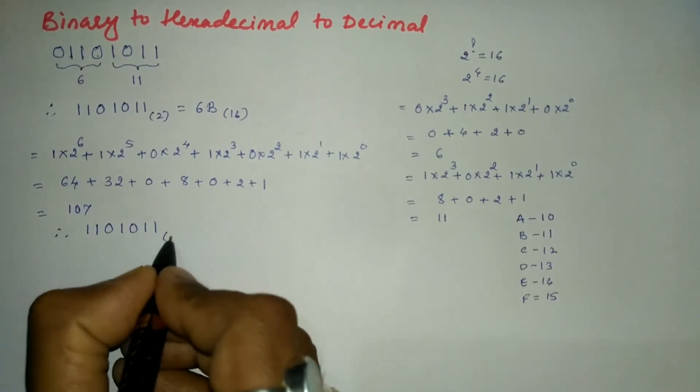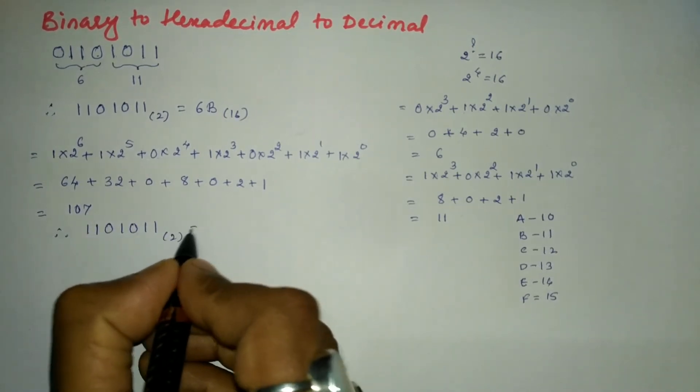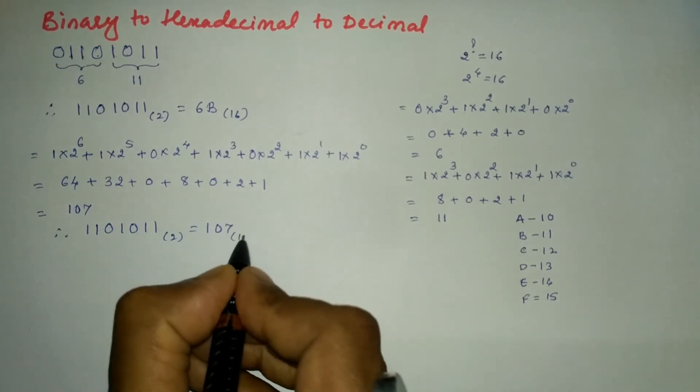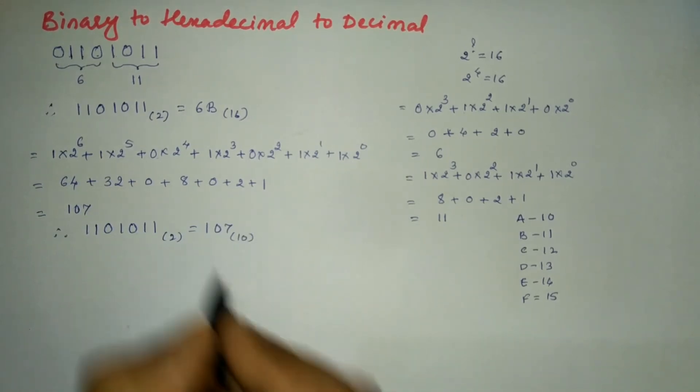Therefore, 1101011 in base 2 is equal to 107 in base 10.